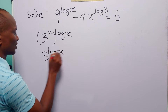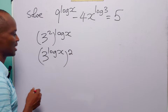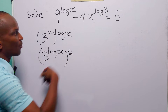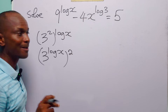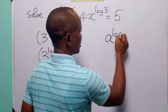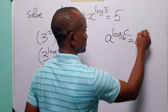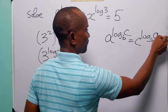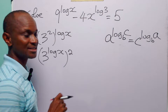When we switch the places of those two powers, we have 3 to the power log x squared. Notice that here we have 3 to the power log x, while here we have x to the power log 3. Remember that a to the power log base b of c is equal to c to the power log base b of a — the base of the two logarithms must be the same.